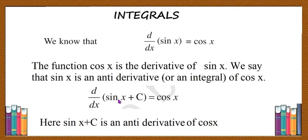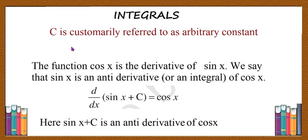Here c may be any real number. For example, sin x plus 1: the derivative of sin x plus 1 is also cos x. C is an arbitrary constant, and c is customarily referred to as the arbitrary constant.